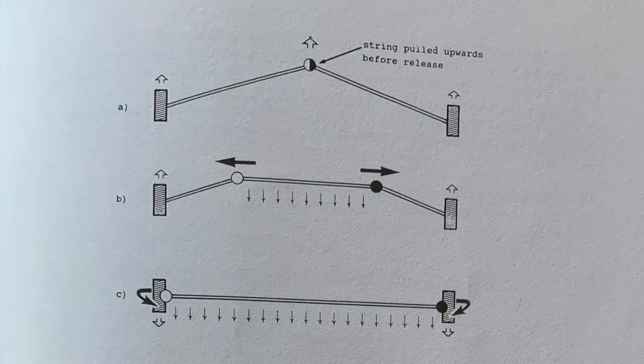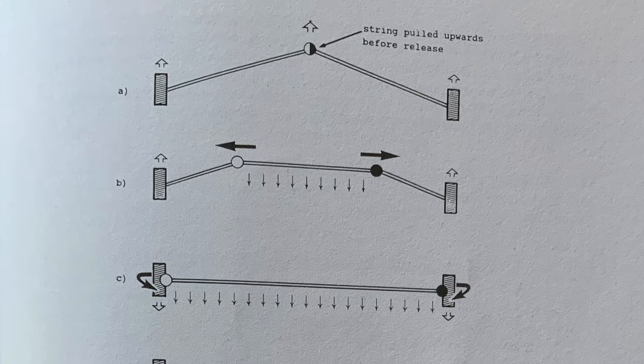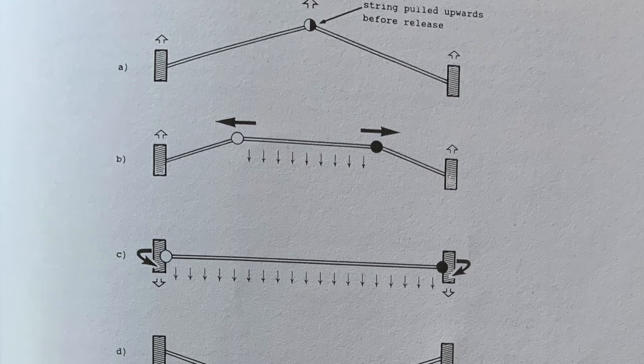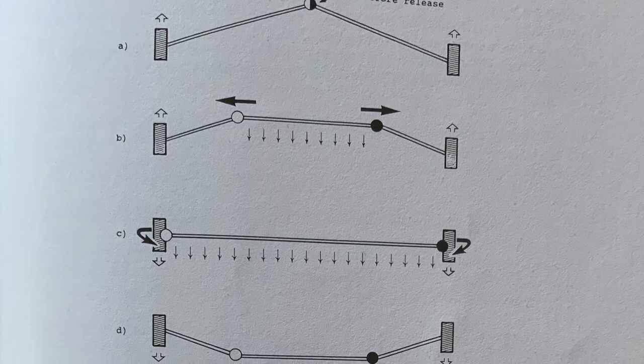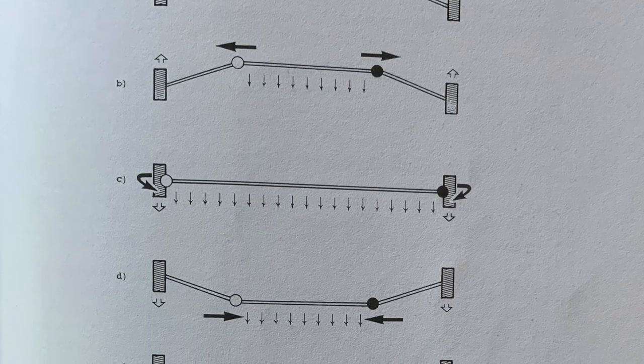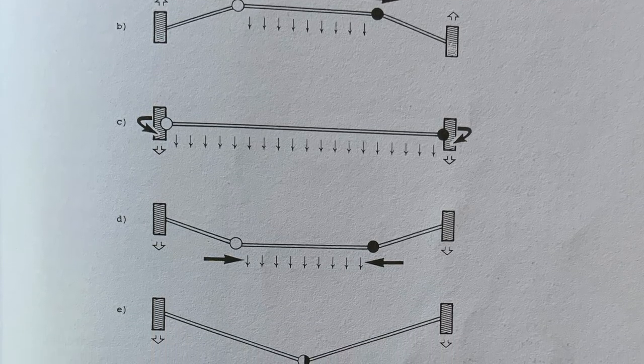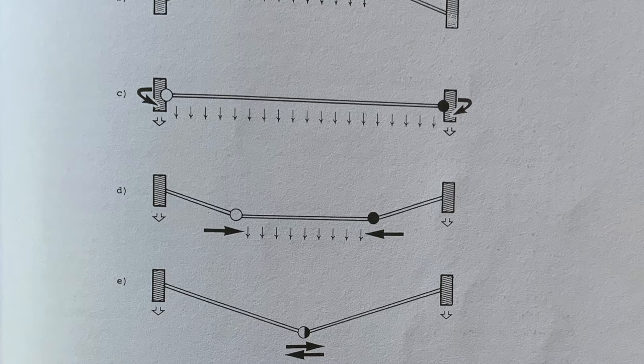The string has now gone through a whole cycle of vibration, and the time it has taken to do this is called a period. If left unaffected by outer influences, it will continue to vibrate in the same manner until all energy has left it, the wave tops becoming gradually lower and lower.